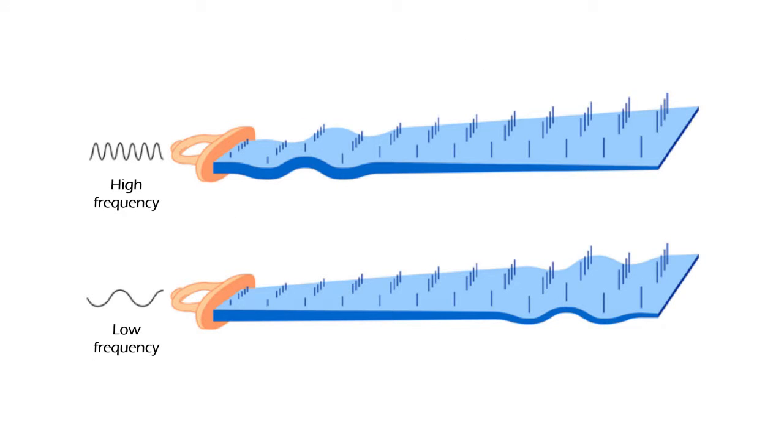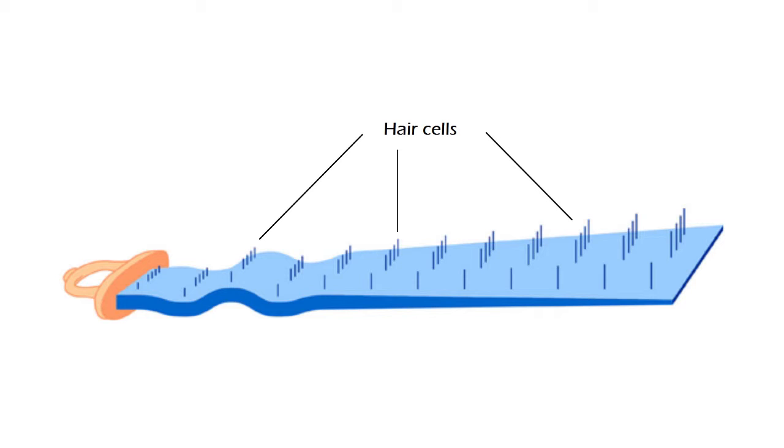Let's consider the fact that different frequencies resonate at different points of the basilar membrane. This event may be basically interpreted as the basilar membrane separating a sound into its frequency components. And the hair cells are found in different points on the basilar membrane, so the cells that are stimulated will depend on the points on which the basilar membrane resonates. In other words, the inner ear performs spectral analysis, which means that we perceive sound not based on its waveform but rather based on its frequency spectrum.